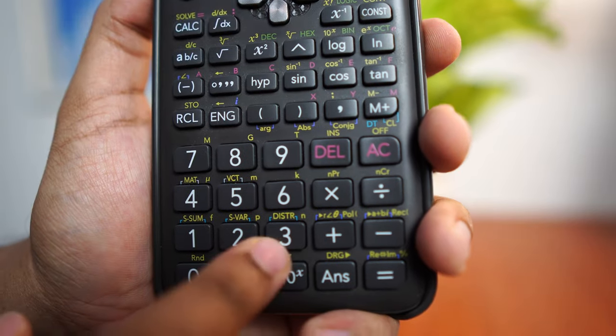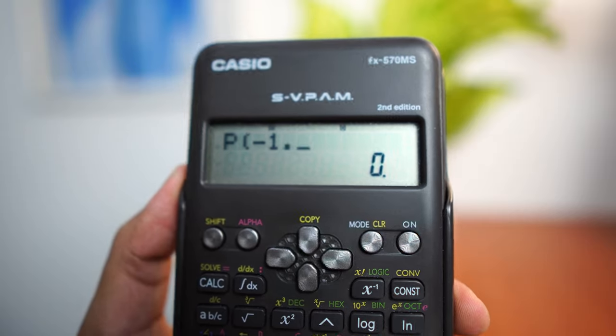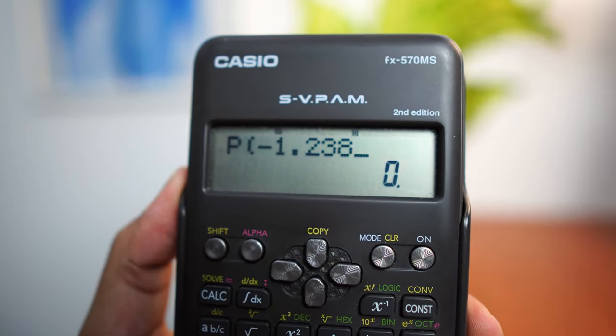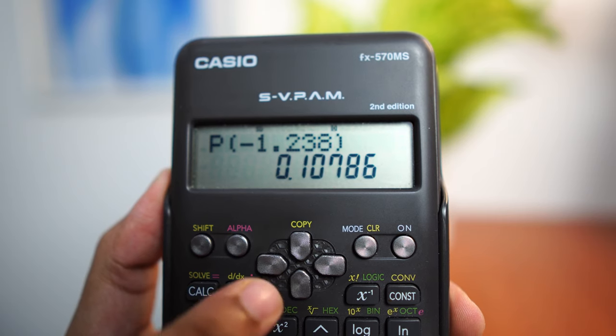This would be a lower tail probability on the left side. So we go to shift, 3 and then choose P. Now, we key in the Z-value, negative 1.238 and you would get 0.10786. This is the probability of Z being less than negative 1.238.